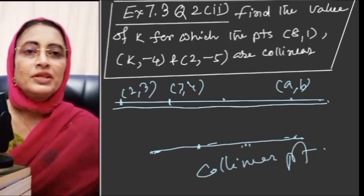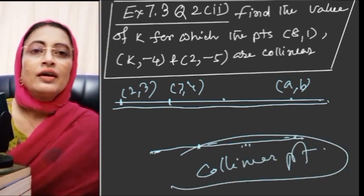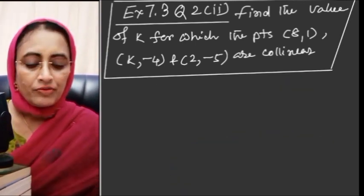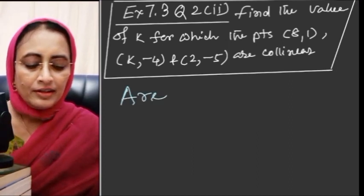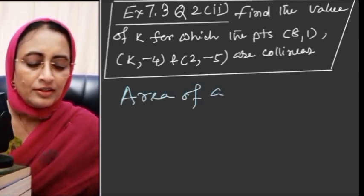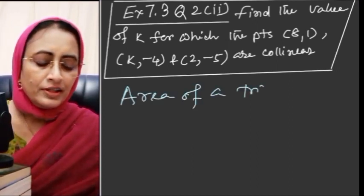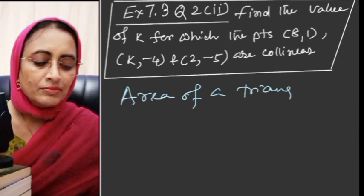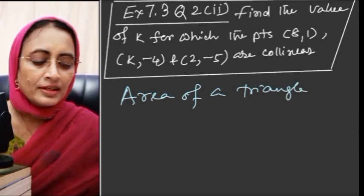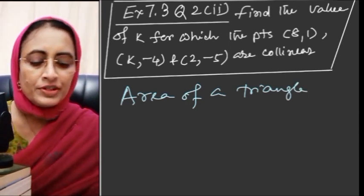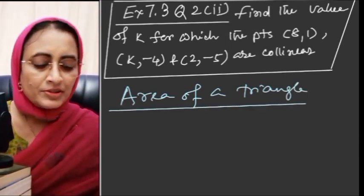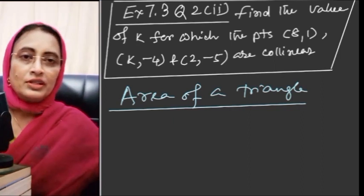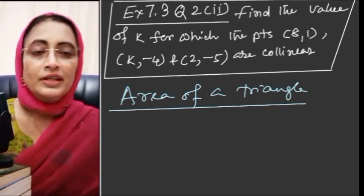To check collinearity, we will use the area of triangle. We know that using the area of triangle formula, we can determine whether points are collinear or not.